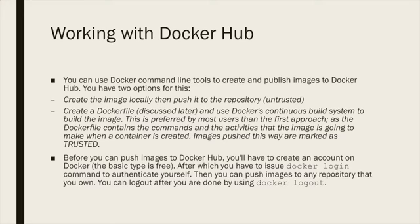So if this image is automated, this means the Dockerfile is available and you can read it before you attempt to run a container, and see exactly what this image will do to the system. That is trusted and a more favorable choice for most users. Before you can push images to Docker Hub, you will need to create an account on Docker. The basic type of account is free, after which you issue a Docker login command to authenticate yourself. Then you can push images to any repository you own, and log out afterward using Docker logout.